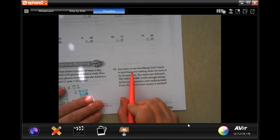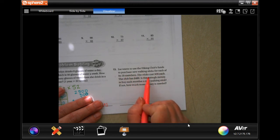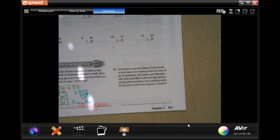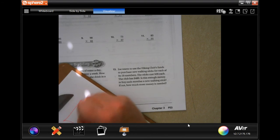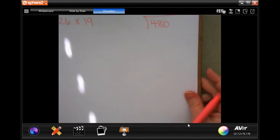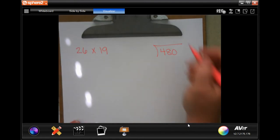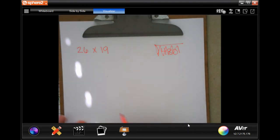Joe wants to use the hiking club's funds to purchase new walking sticks for each of its 19 members. The stick costs $25 each and the club has $480. Is it enough money to buy each member a new walking stick? If not, how much more money is needed? I'm going to use scratch paper so that I know I'm going to have enough room. You can always use scratch paper and just staple it to your paper when you turn it in.